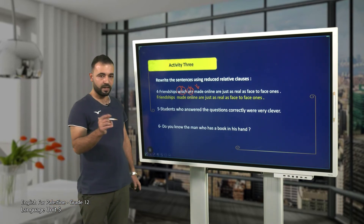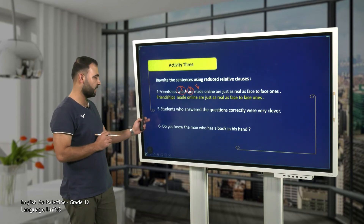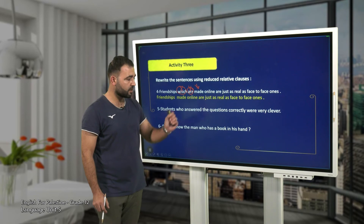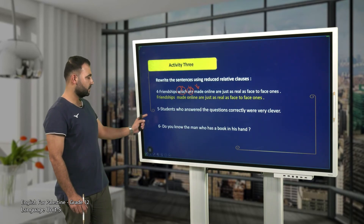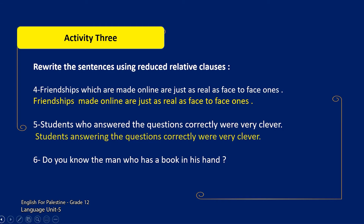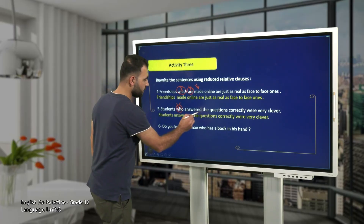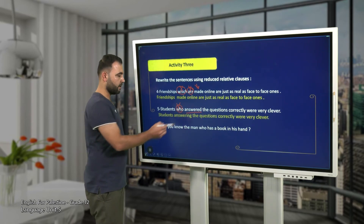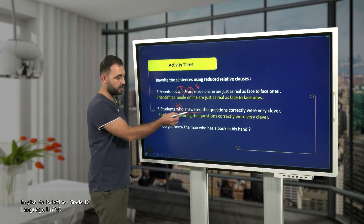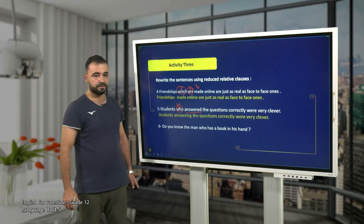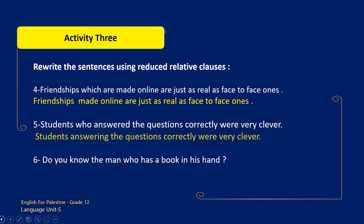Number five: 'Students who answered the questions correctly were very clever.' We delete the relative pronoun and use the -ing form — 'answering' — because it is active and the doer is known. Number six: 'Do you know the man who has a book in his hand?' The answer is: 'Do you know the man having a book in his hand?' It's a question, so 'who' is deleted and 'has' turns into the infinitive 'have', then we add -ing: 'having.'